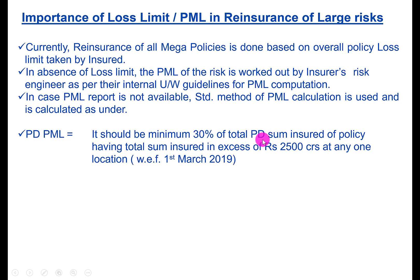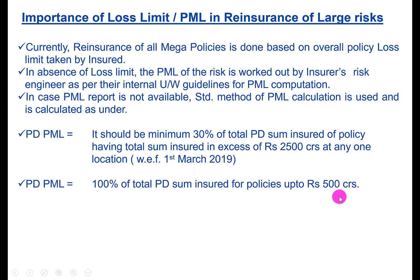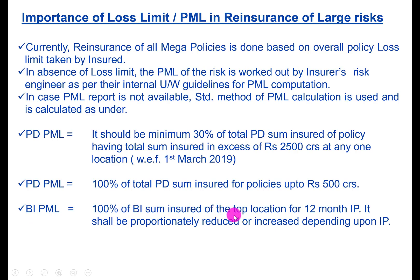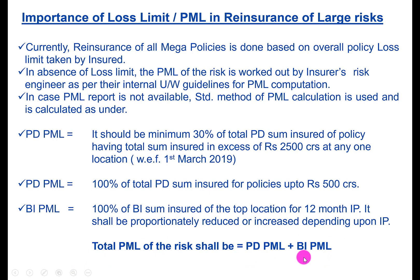If no PML report is available, the standard method applies: PD PML must be a minimum of 30 percent of total PD sum insured of the policy having sum insured in excess of 2,500 crores at any one location — a rule effective from 1st March 2019. For risks where sum insured is less than 500 crores, PML is taken as 100 percent of PD sum insured. BI PML is 100 percent of BI sum insured of the top location for a 12-month indemnity period, proportionately adjusted if otherwise.